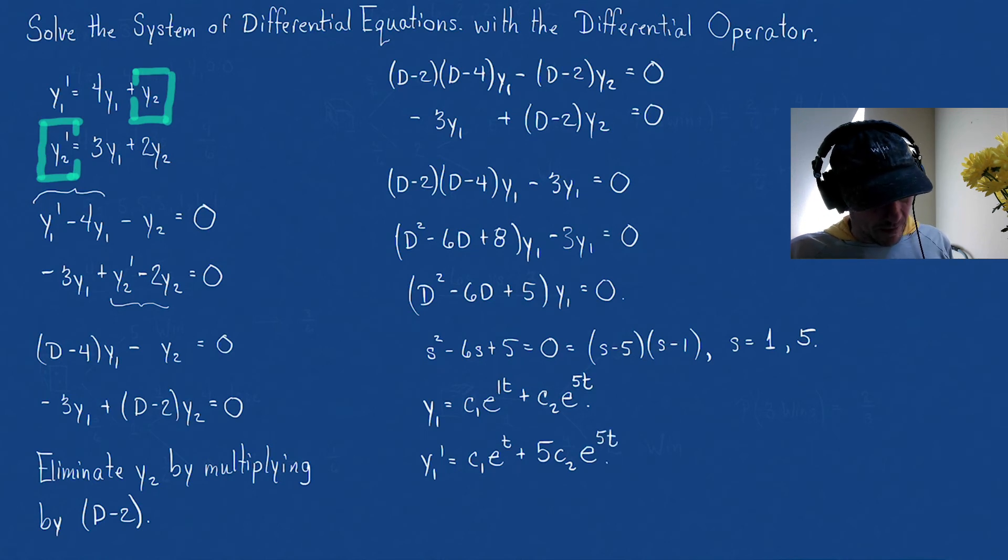So y1' = c1e^t + 5c2e^(5t). There we go. And then, now look at what we said. That first equation just says that y2 = y1' - 4y1. So let's write this out.